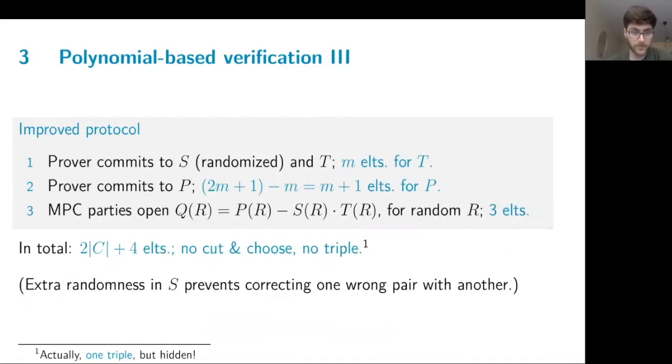So here we can have our improved protocol where we commit to a randomized polynomial S, which contains the inputs, and a polynomial T, which contains the inverses. The P can be defined for its first endpoints in the clear because we are expecting the first endpoints to be equal to one. However, the prover needs to specify the remaining m plus one points because P is of degree 2m. So this adds an additional communication cost. And the parties can now open P, S, and T evaluated at the random point R, which has a further constant cost of three rounds. So in total, we see here that we have only two times the number of gates in our communication costs. So we've almost halved the cost of the communication already. And we've removed any kind of cut-and-choose. So we're not executing the circuit wastefully anymore. And we don't have any triples, except that we do.